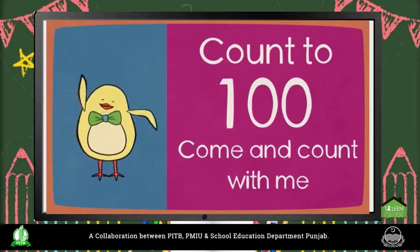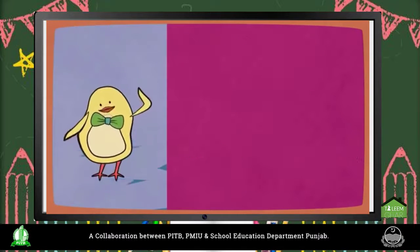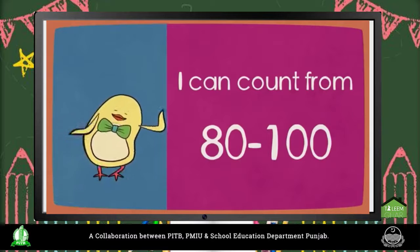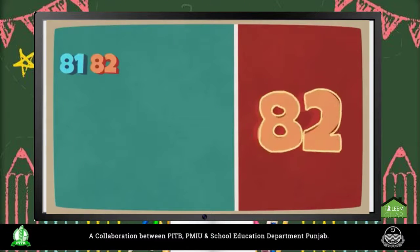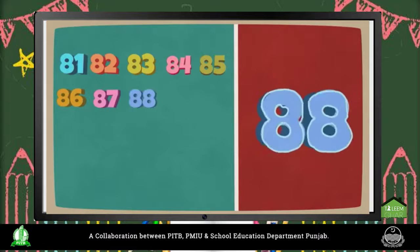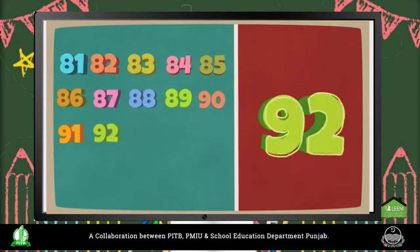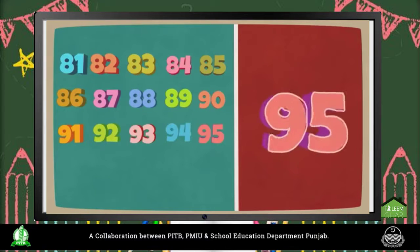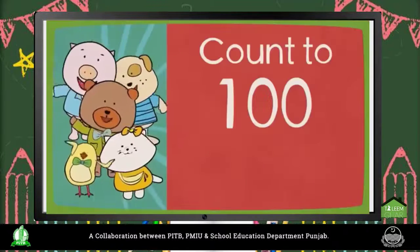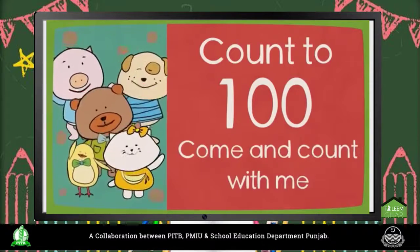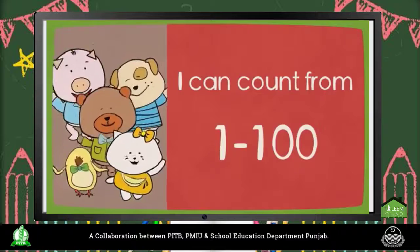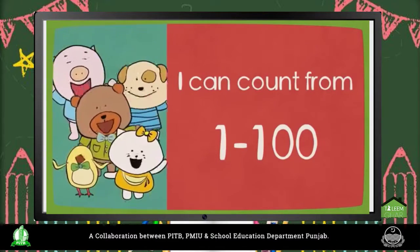Count to 100, come and count with me. I can count from 80 to 100. 81, 82, 83, 84, 85, 86, 87, 88, 89, 90, 91, 92, 93, 94, 95, 96, 97, 98, 99, 100. Count to 100, come and count with me. I can count from 1 to 100.